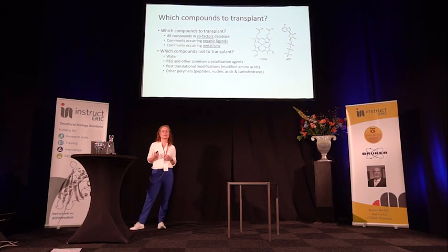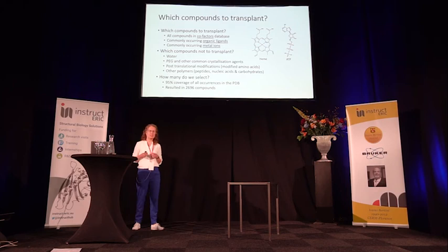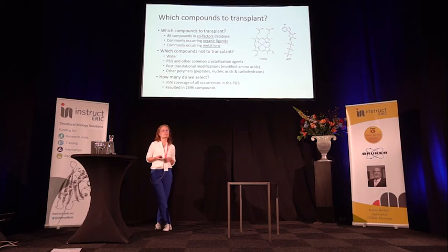Now that we had a selection, the next question was: how many compounds do we select? We counted all occurrences — the cumulative occurrence of all compounds present in the PDB — and took 95% coverage. In total, this yielded a list of about 2,700 compounds.